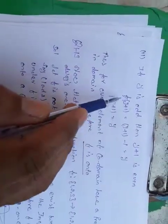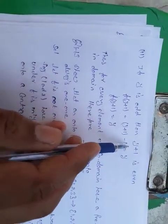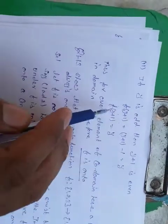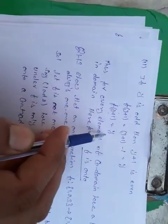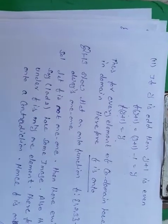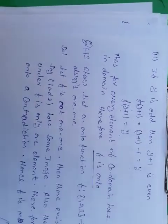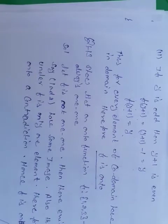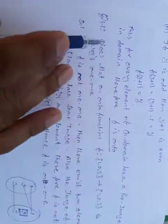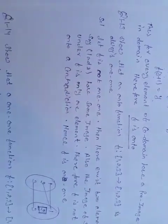If y is odd, then y − 1 is even, and f(y − 1) = (y − 1) + 1 − 1... which simplifies to y. So the pre-image of every even element is an odd number, and the pre-image of every odd element is an even number. Thus for every element of the co-domain there is a pre-image in the domain, therefore f is an onto function.